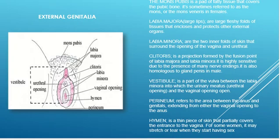We also have the labia minora and the labia majora. Literally, 'labia' means lips, 'majora' means something large, and 'minora' means something small. The labia majora is a large fatty tissue fold that protects the external genitalia — the vulva. The labia minora is also a fatty tissue that surrounds the opening of the vestibule, and is directly beneath the labia majora.